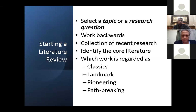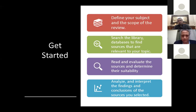You have to define what is your topic or research questions, then you work chronologically backwards — you have to collect the most recent research, identify the core literature, and classify and evaluate the papers you collected. Which work is classic, landmark, pioneering, or path-breaking? You have to define your subject and the scope of this review, search in the library databases to find relevant sources, read and evaluate which papers are suitable, and analyze and interpret your findings.